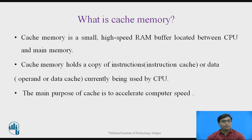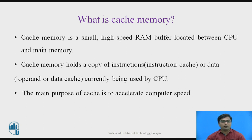The main purpose of Cache is to accelerate the computer speed, because Cache Memory speed is very high compared to the Primary Memory. If instructions are copied into Cache Memory and repeatedly used, the CPU will access those instructions from Cache Memory, and the speed of execution will be increased.